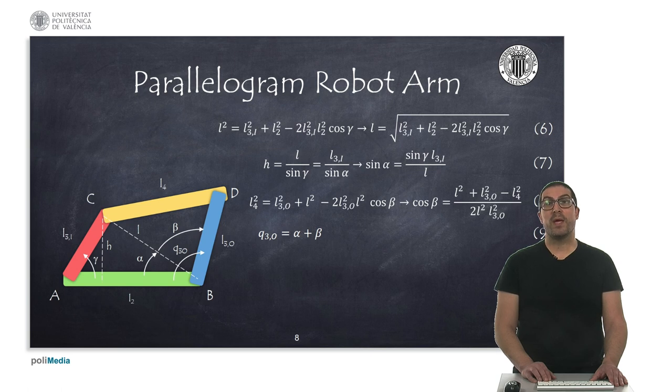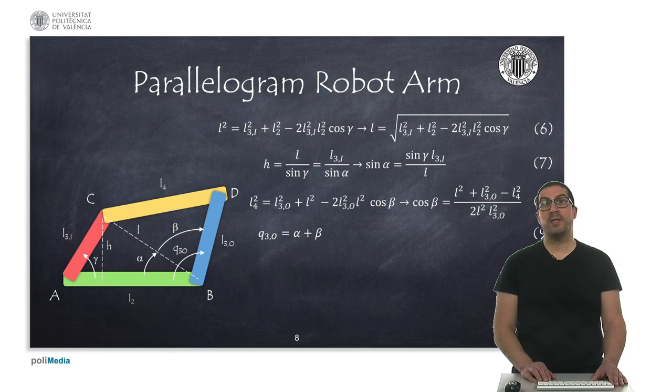Now, we can apply the law of cosines again in triangle BCD, but this time we marginalize out the angle beta, since the three sides of the triangle are known, as shown in formula 8.